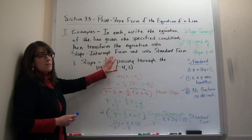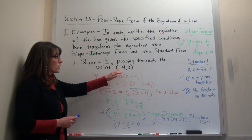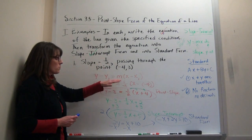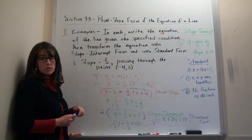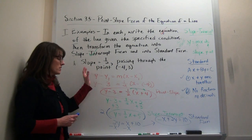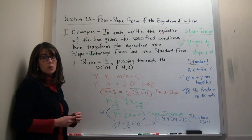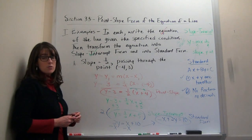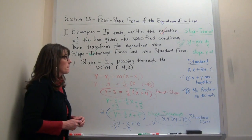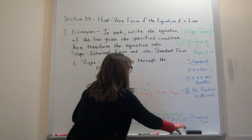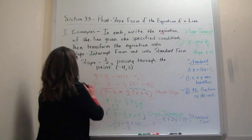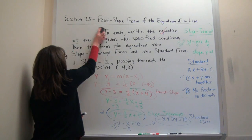So this is how you take information when you're given a point and a slope, put it into point-slope form, and then transform it into the other two forms. Let's practice that again with another example.